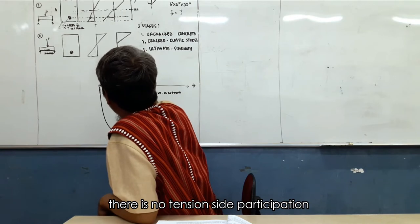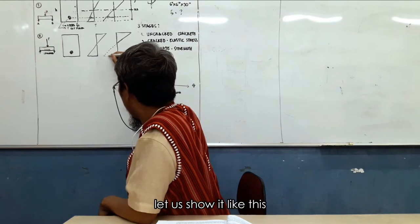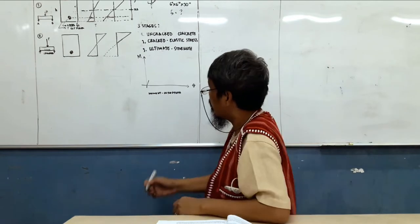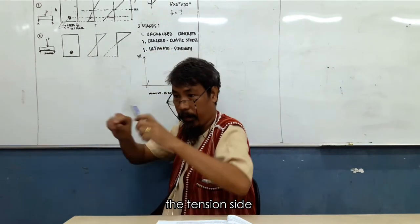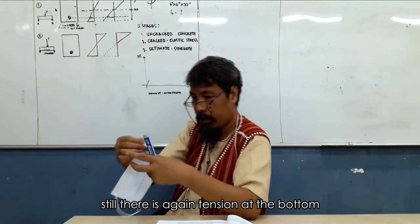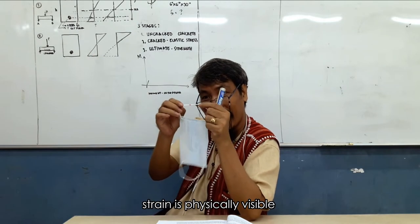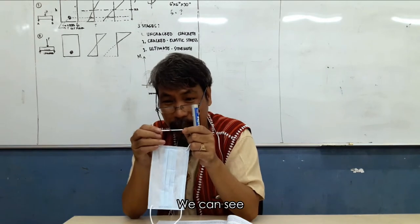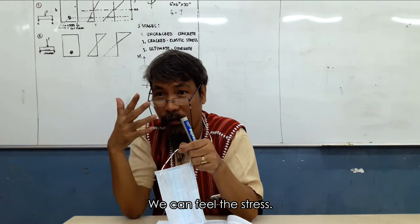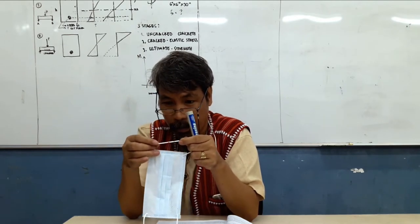There is no tension side participation. But still, there is tension at the bottom. And strain. Strain is physically visible. We can see strain. We cannot see the stress. We can feel the stress, but we cannot see. We can see the strain.